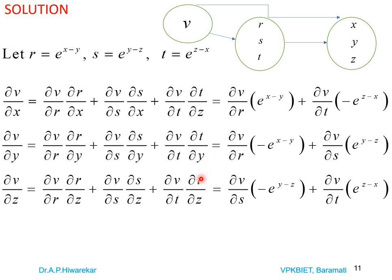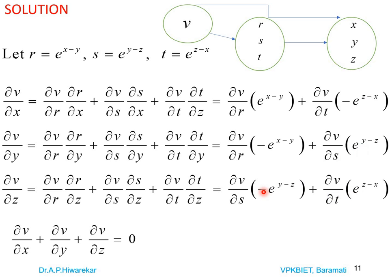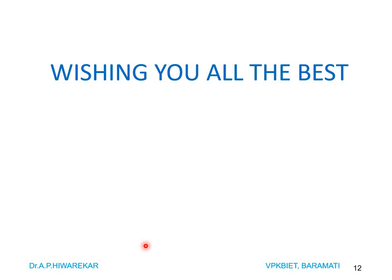Adding all three partial derivatives, each paired term cancels: the +e^(x-y) from ∂v/∂x cancels with -e^(x-y) from ∂v/∂y, the +e^(y-z) from ∂v/∂y cancels with -e^(y-z) from ∂v/∂z, and the +e^(z-x) from ∂v/∂z cancels with -e^(z-x) from ∂v/∂x. So ∂v/∂x + ∂v/∂y + ∂v/∂z = 0. You can try more problems of this type. Wishing you all the best and happy learning. Thank you for watching.